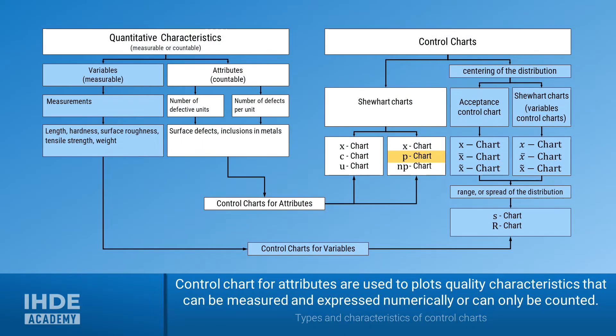This picture shows the relationship between the various characteristics and the control charts used. The different characteristics are shown on the left and the different control charts on the right. The quantitative characteristics can be divided into two different categories. First, the variable characteristics. These are all characteristics that can be measured. They always have a value and a unit. Examples of this would be the length, hardness, weight, surface roughness or tensile strength of a component. But we don't want to go into detail about them here.